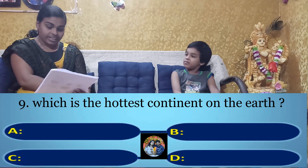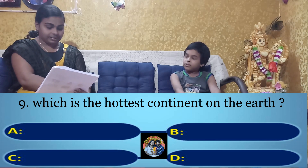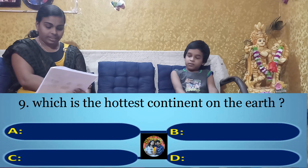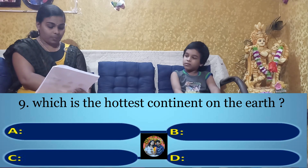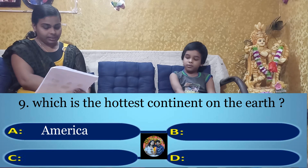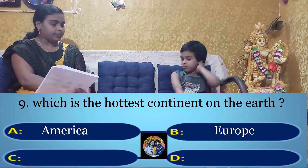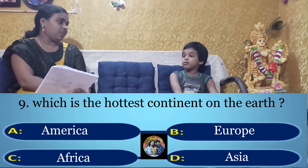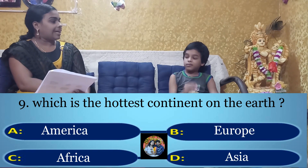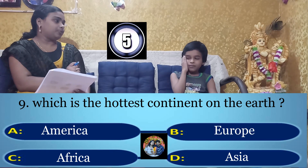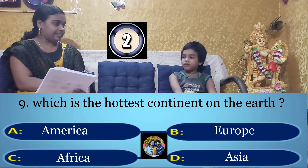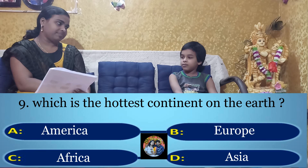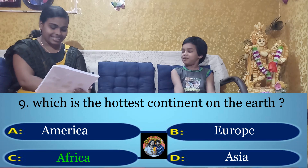Your ninth question: Which is the hottest continent on the earth? Option A: America, Option B: Europe, Option C: Africa, Option D: Asia. Your time starts now. Africa. Yes, the right answer is Option C: Africa.